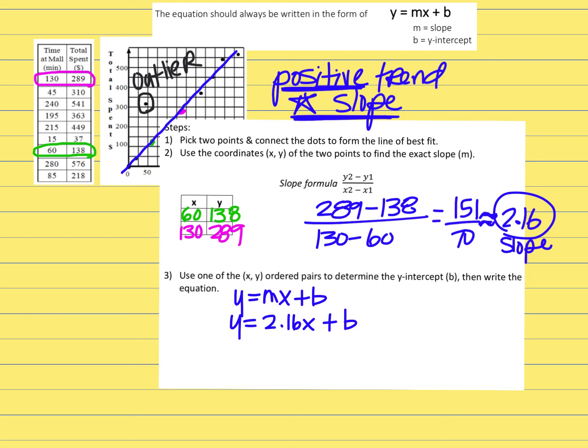Then choose one of the ordered pairs. I'm just going to choose 60 and 138. Okay, for x, I'm going to put in a 60 right here. And then for y, I'm going to put in 138 right there. And then I'm going to solve the equation. So instead of y, now I have 138 equals 2.16. But instead of x, I'm going to put 60 plus b.